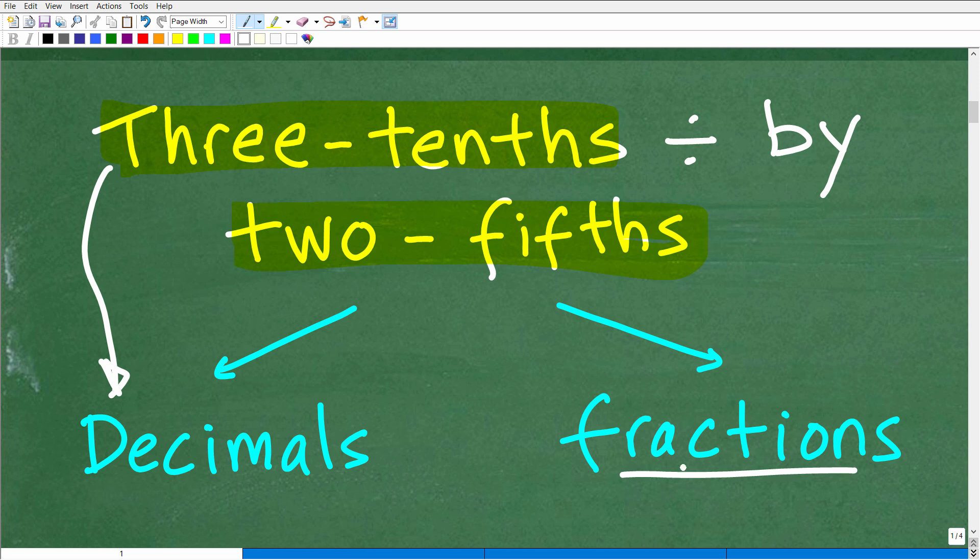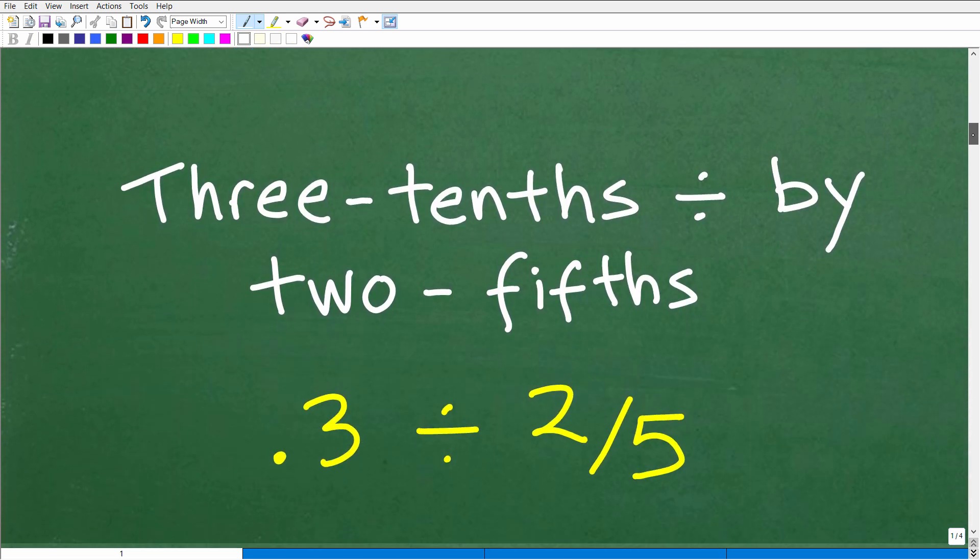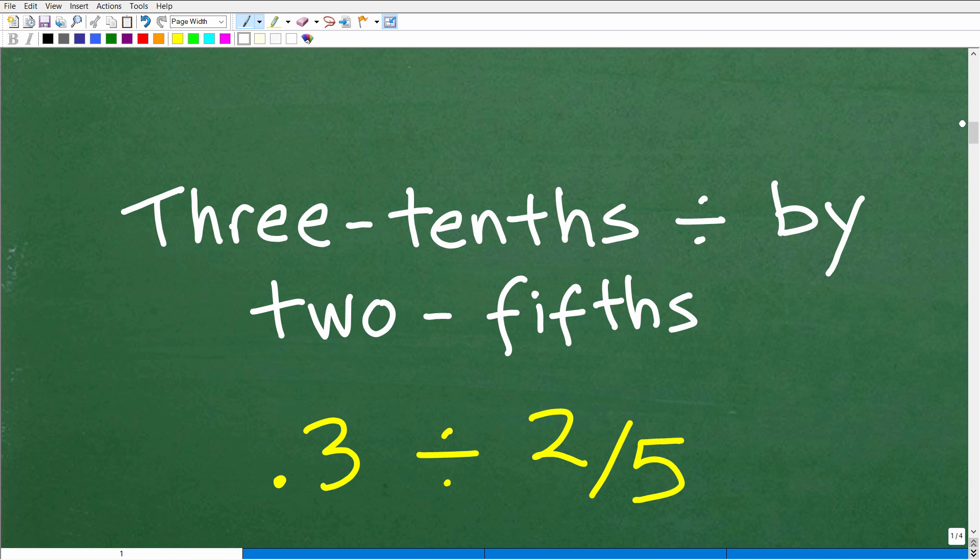Now, can we convert a fraction to a decimal? Of course we could. So we have to make a decision on how we're going to work. So here again, we have three-tenths divided by two-fifths.